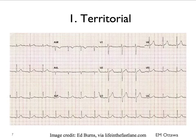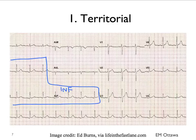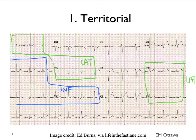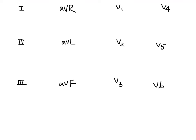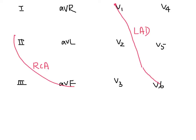On the 12-lead ECG, the inferior part of the heart is looked at by leads 2, 3, and AVF. The lateral part of the heart is looked at by leads 1, AVL, V5, and V6. V1, V2, V3, and V4 comprise the anterior part of the heart. The inferior part is mostly supplied by the right coronary artery, the anterior by the left anterior descending artery, and the lateral wall by branches of the LAD and left circumflex arteries.